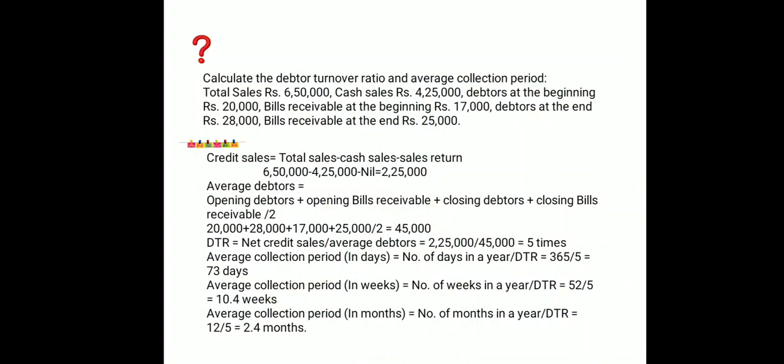From the question we have total sales of rupees 6,50,000 and cash sales of rupees 4,25,000. We want only credit sales, so the formula is: total sales minus cash sales minus sales return (if given). Here sales return is not given, so: 6,50,000 minus 4,25,000 gives us credit sales of rupees 2,25,000.